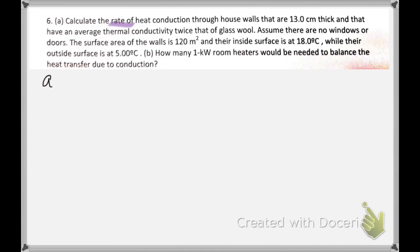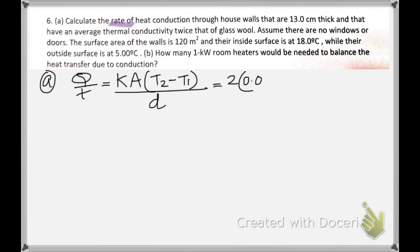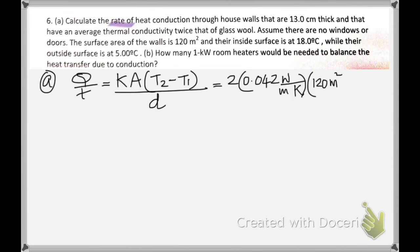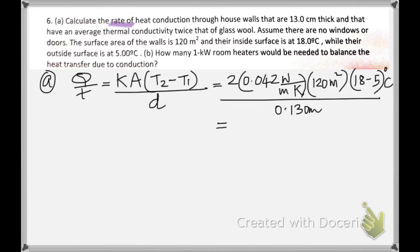Here is the formula: Q/T = K × A × (T2 − T1) / D. K is two times the thermal conductivity of glass wool, as the problem states. The area is 120 m², the temperature difference is Th − Tc, and the distance is 0.13 m (converting 13 cm to meters).